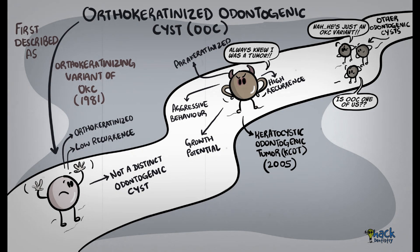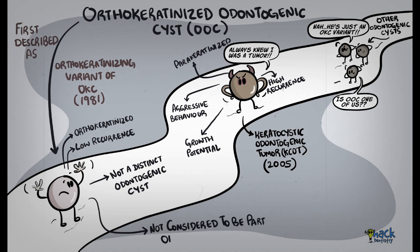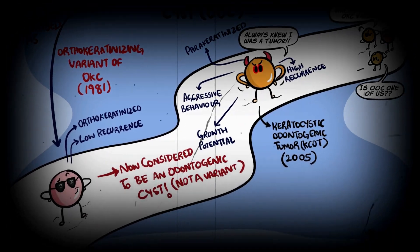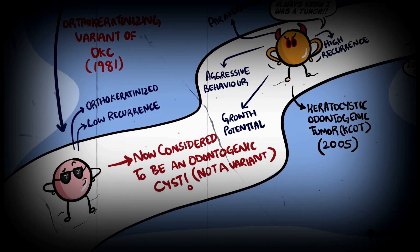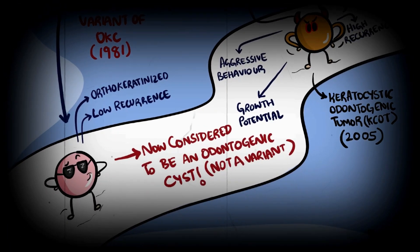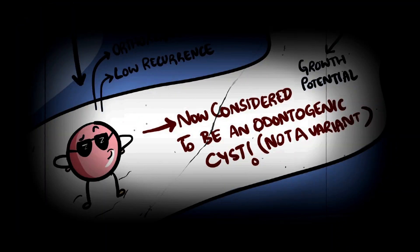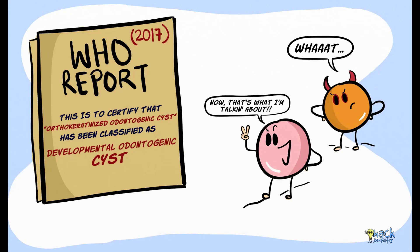However, ortho-keratinized odontogenic cyst was not considered to be part of the tumor spectrum of keratocystic odontogenic tumor. It is now known and accepted that ortho-keratinized odontogenic cyst is a distinct clinical pathologic entity on its own. In fact, it has been listed as a developmental odontogenic cyst in the recent World Health Organization classification of odontogenic cysts.